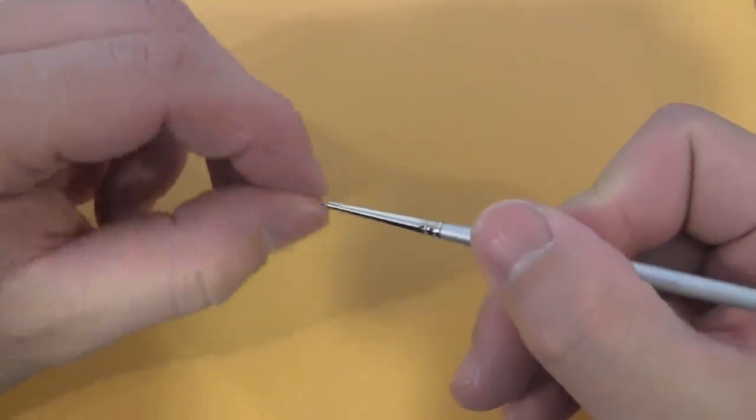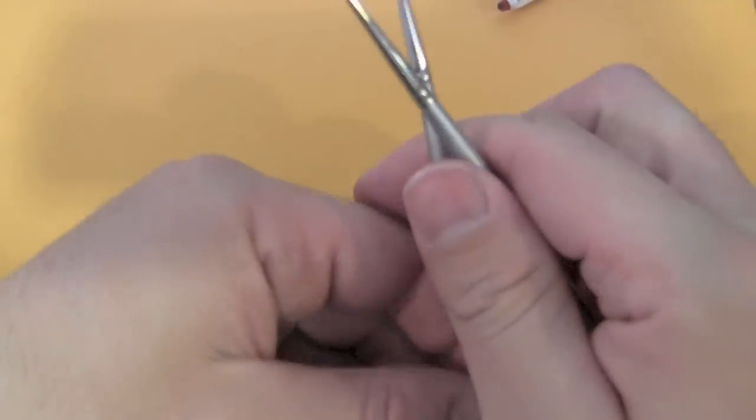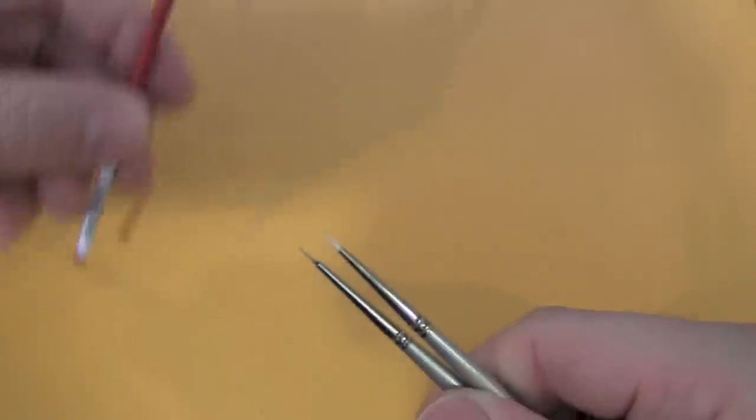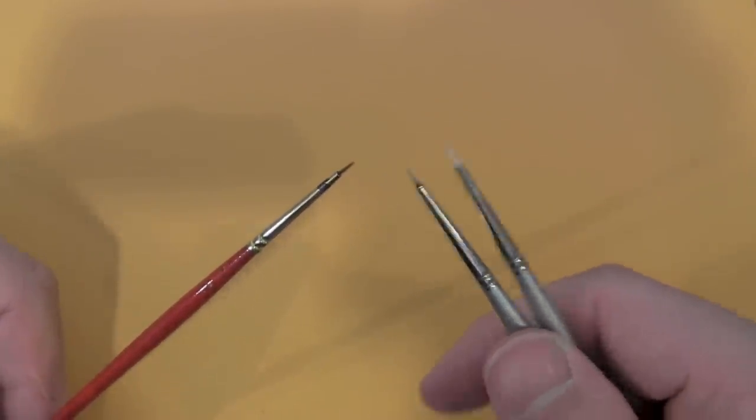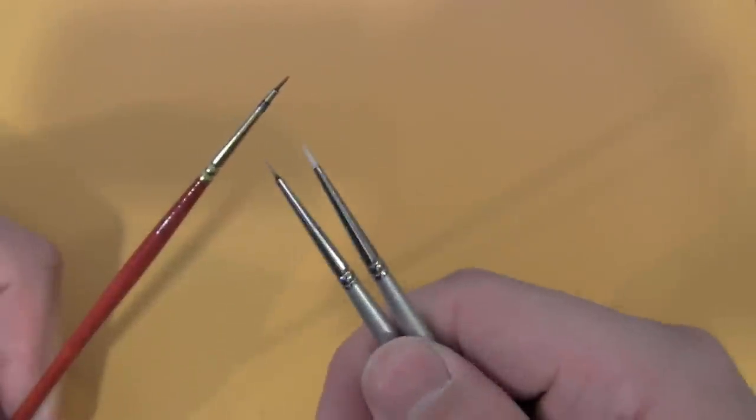So you can take that one dollar, dollar fifty brush and make it into a nice detailing brush. I've done it with a couple other ones, I use them all the time. You can get them really thin or a little bit thicker.